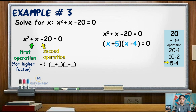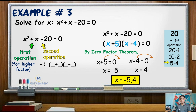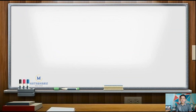By the zero product property, x plus 5 equals 0 and x minus 4 equals 0. Hence, the values of x are negative 5 and positive 4.